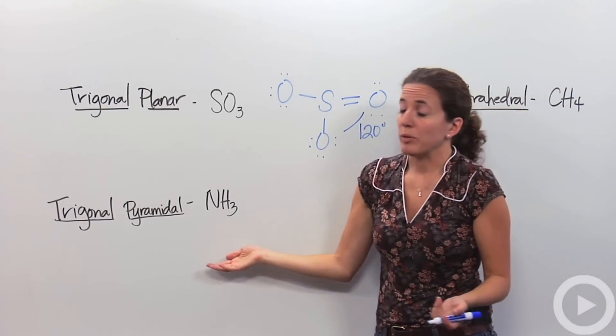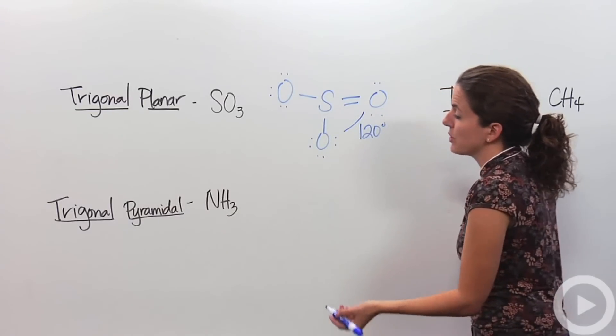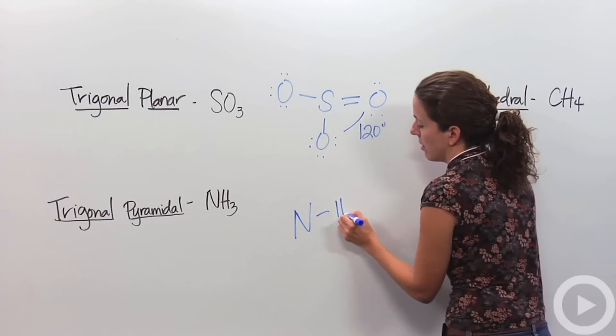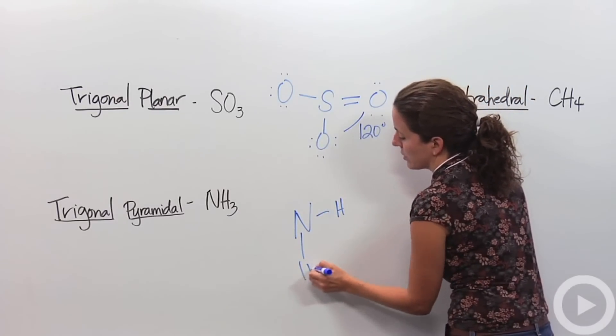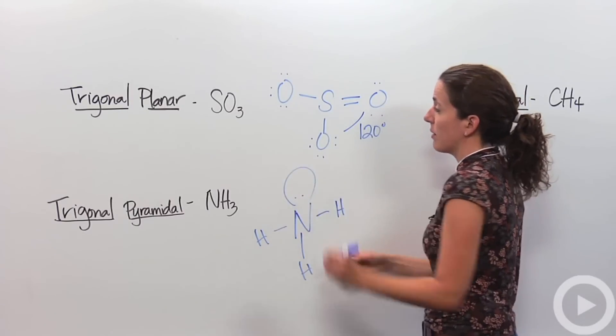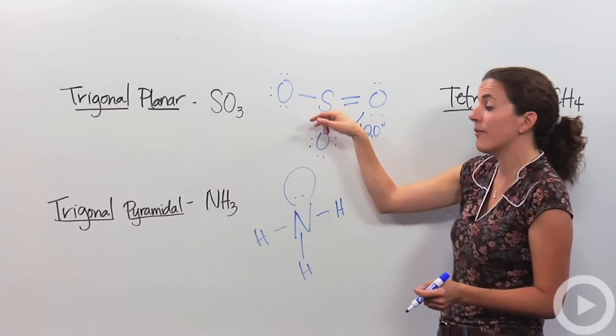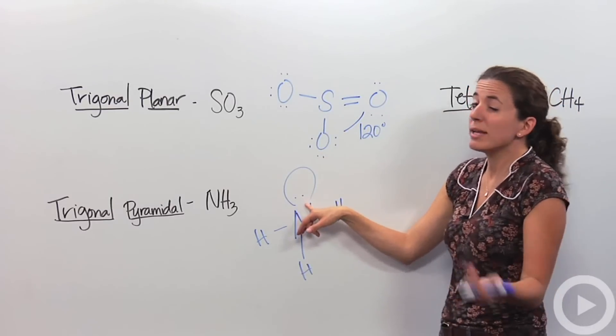Something very similar to the trigonal planar is trigonal pyramidal. Ammonia is a good example of trigonal pyramidal. So we have our nitrogen. I'm just going to draw this regular. Notice the same thing. Between this one and this one, the major difference is our lone pair of electrons. This one doesn't have them. This one does. The same exact idea is going to happen.